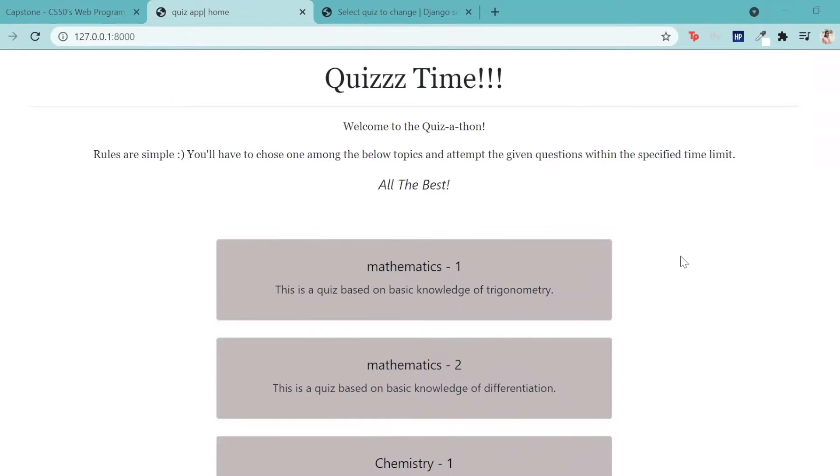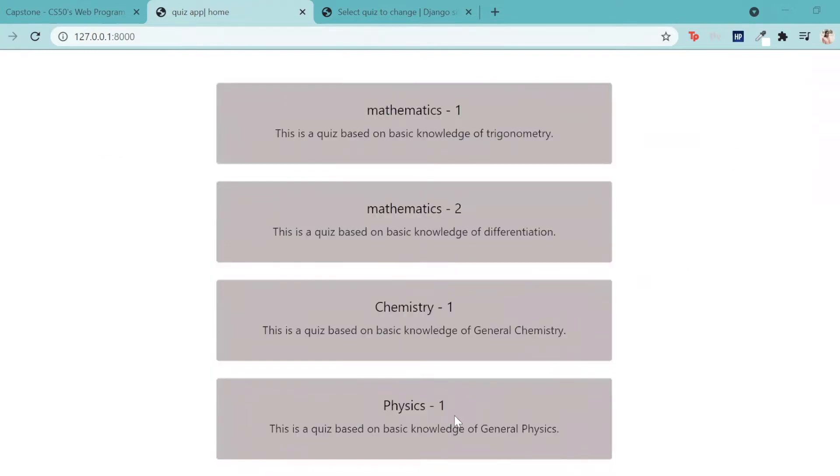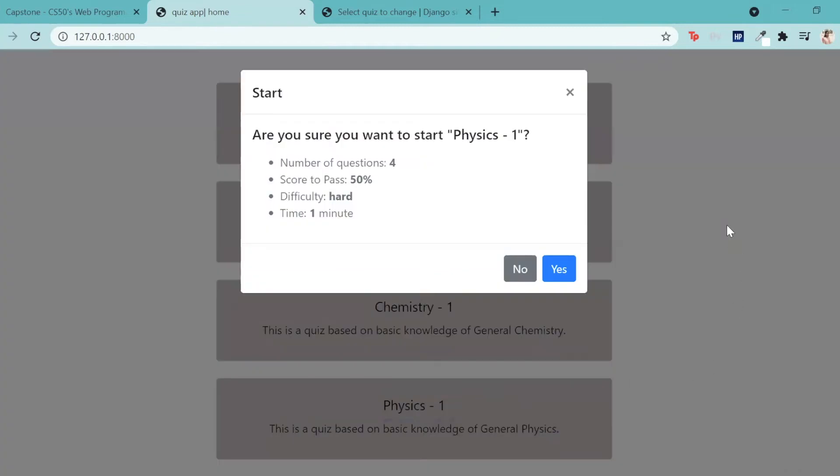Next specification is start. So if I click on any one of these quizzes, suppose Physics 1, then a modal box appears giving me a description of the quiz and it specifies the difficulty, number of questions, score to pass and the time limit for answering the quiz. And I have two buttons here saying yes or no whether I would like to start the quiz or go back to the home page.